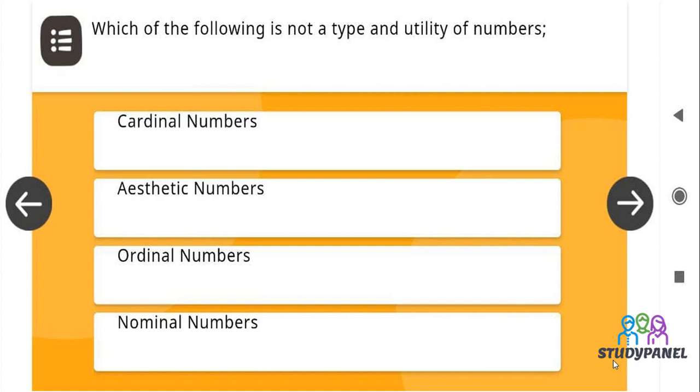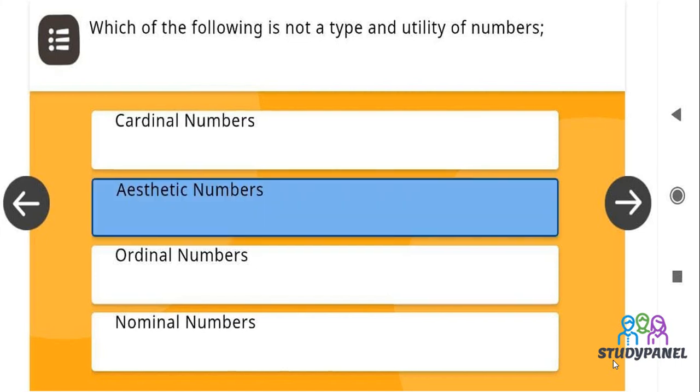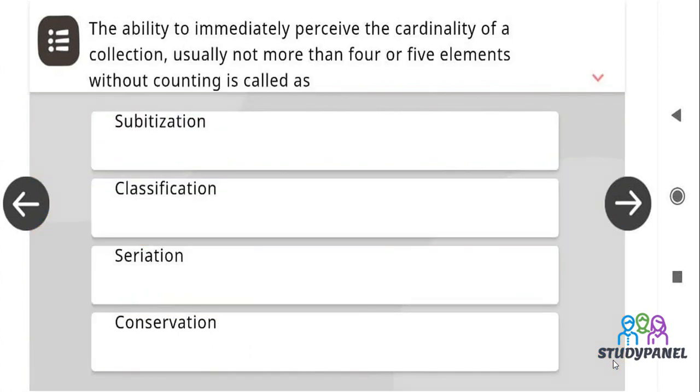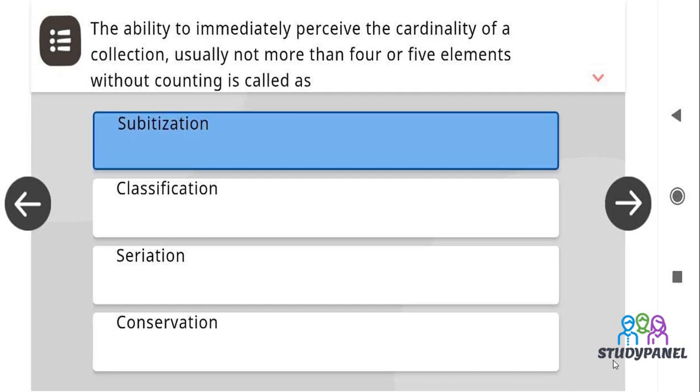Which of the following is not a type and utility of numbers? The correct answer is aesthetic numbers. The ability to immediately perceive the cardinality of a collection, usually not more than 4 or 5 elements without counting is called as subitization.